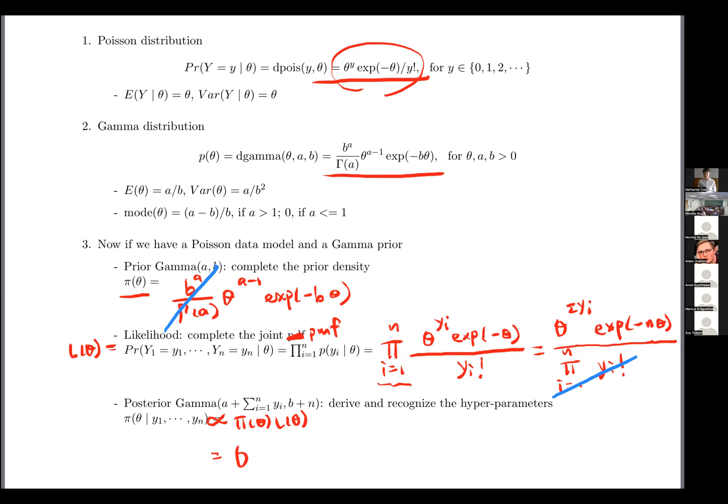What we have, we're going to have θ^(a + Σyi - 1), and then in the exponent, we have -(b + n) times θ. And just like what we did before, at this point, we should be able to recognize the new a is a + Σy, and the new b is b + n. And then that is why we get a gamma(a + Σy, b + n).